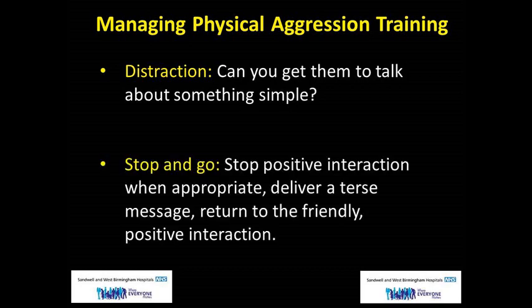Stop and go: this is a style of interacting where you stop positive interaction at the point of unwanted behaviour, then deliver a terse message, but return immediately to friendly positive interaction afterwards. For example: 'Mr Bunnell, you need to stop swearing and you need to behave nicely now. Okay, carry on telling me about your school.' This mechanism provides clear intervention and sets behavioural boundaries whilst quickly restoring the relationship afterwards.